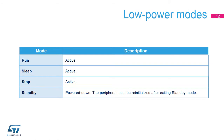The operational amplifiers are active in the following low-power modes: run, sleep, and stop modes. In standby mode, the op-amp is powered down and must be reinitialized for use if returning to one of the higher power modes.